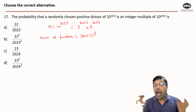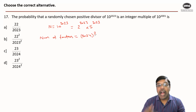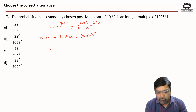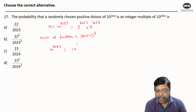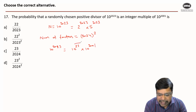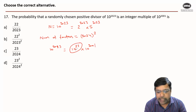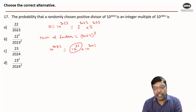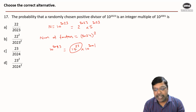Now, out of these factors, how many are integer multiples of 10^2001? We can write 10^2023 as 10^22 × 10^2001. So whatever factors I take for 10^22 will definitely be an integer multiple of 10^2001.